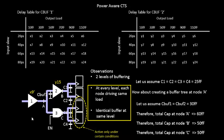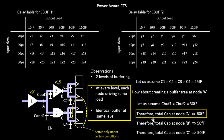Let's characterize this particular circuit. We'll call this the input capacitance of the AND gate — CAND1, because it won't be CBuff1 anymore. The input capacitance of this AND gate is CAND1. The total capacitance at node A was 60 femtofarads.